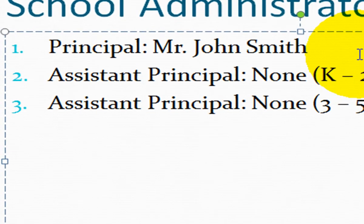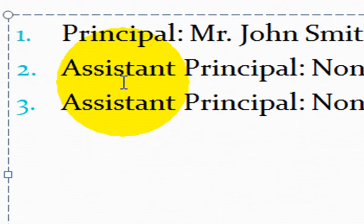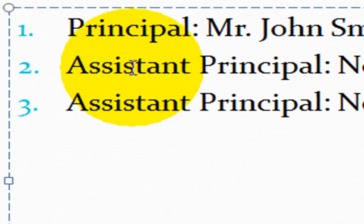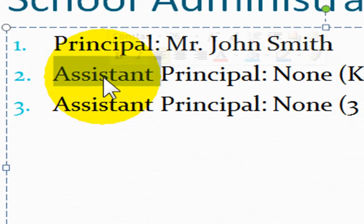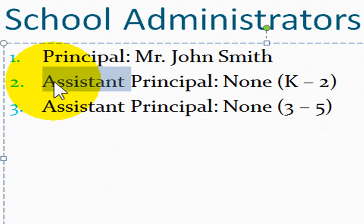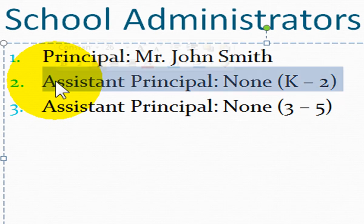If you want to select a word, place your cursor over the word and double click really fast on the left side of your mouse. If you want to select an entire paragraph, triple click really fast.